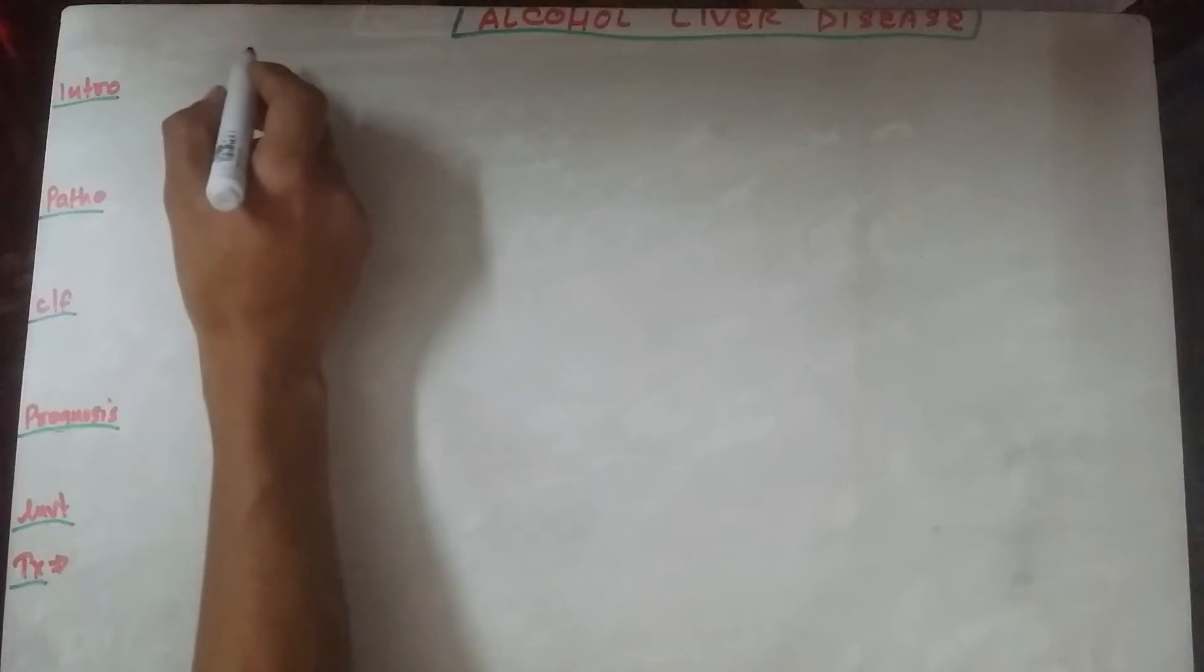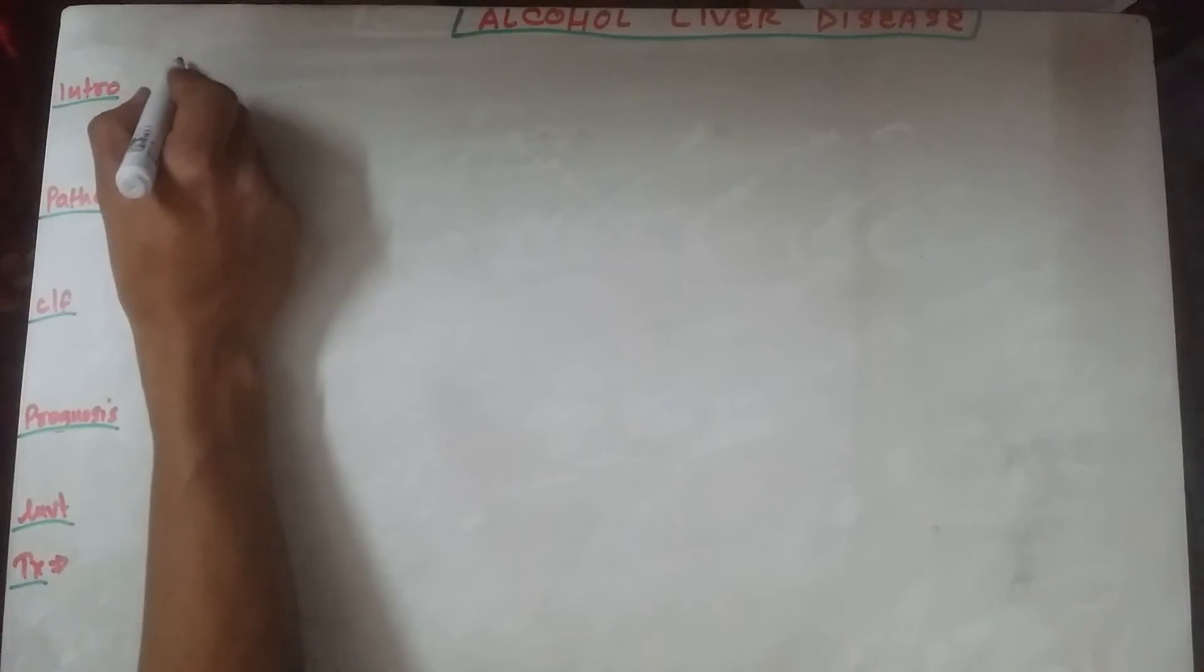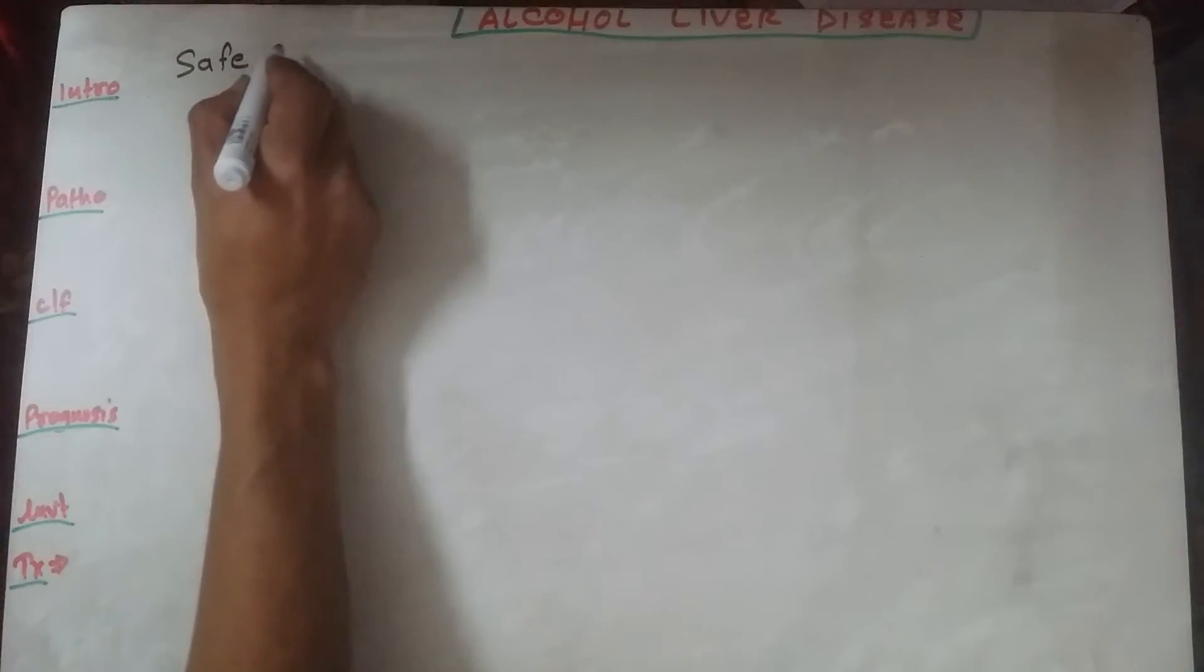Alcoholic liver disease. Alcohol is the most common cause for cirrhosis of the liver. First of all, we need to know the safe limit of alcohol.